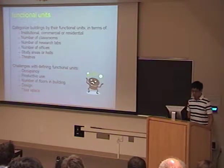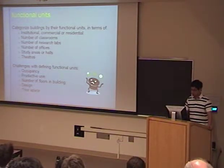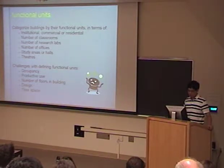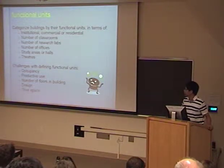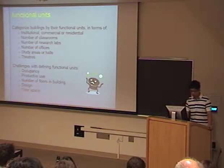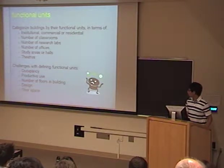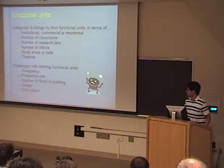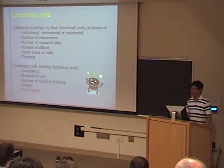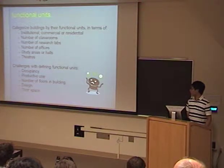Regarding functional units: we categorize buildings by their functional units — classrooms, research labs, offices, study areas, and theaters. The challenges with defining functional units involve occupancy, productive use, and number of floors. For example, if we have two equal-area classrooms but one with higher occupancy, that one clearly has greater efficiency.